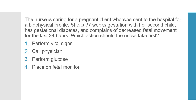Here's our next question. The nurse is caring for a pregnant client who was sent to the hospital for a biophysical profile. She has 37 weeks gestation with her second child, has gestational diabetes, and complains of decreased fetal movement for the last 24 hours. Which action should the nurse take first? Number 1: perform vital signs. Number 2: call a physician. Number 3: perform glucose test. Number 4: place on fetal monitor. This is an application and priority question. The focus should be on decreased fetal movement for 24 hours. Also note who the question is referring to — in this case, we're focusing on the fetus.